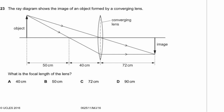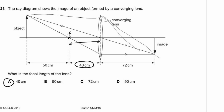Question 23. A ray diagram shows the image formed by a converging lens. There are three key rays: one straight to the lens then down to the focal point, one through the centre, and one through the focal point on the same side. The focal length — the distance from the focal point to the centre of the lens — is 40cm. The answer is A.